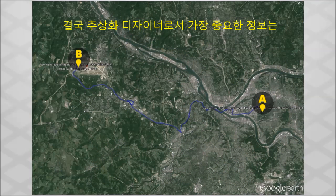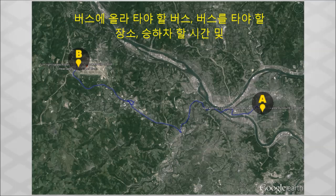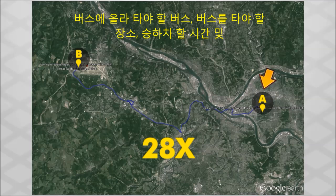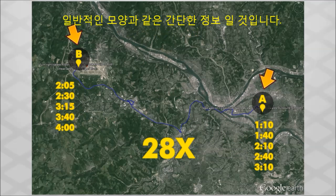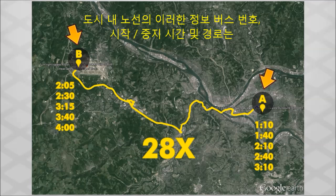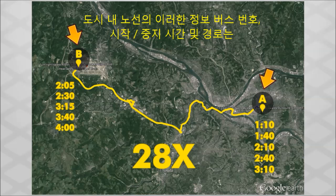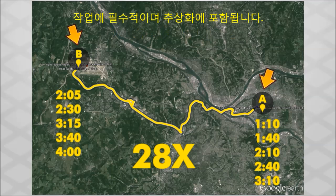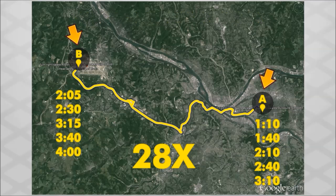In the end, as the abstraction designer, you might decide that the most important information is simply where to get on the bus, which bus to get on, where to get off the bus, what times to get on and off, and the general shape of the route within the city. These pieces of information — bus number, start, stop times, and route — are essential to the task, and are included in the abstraction.